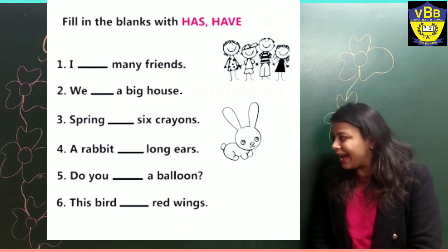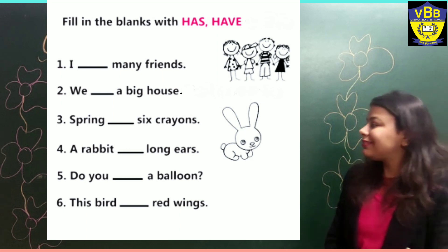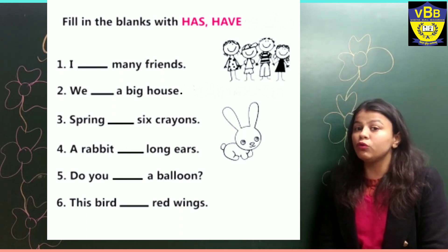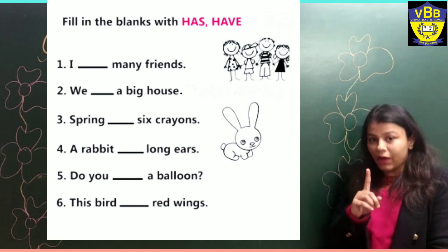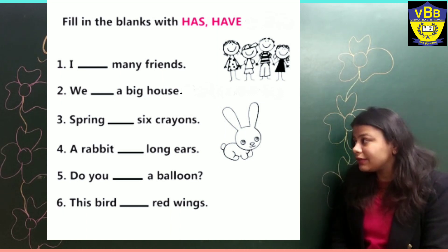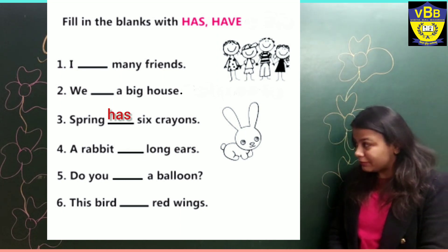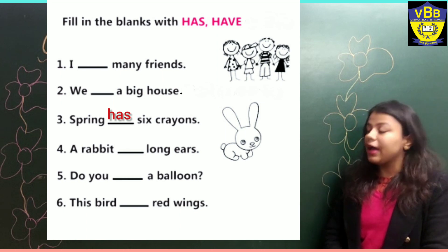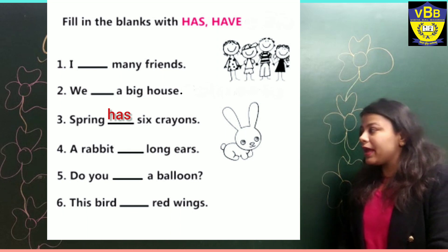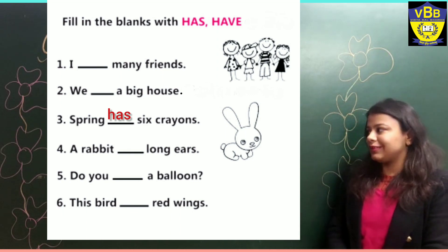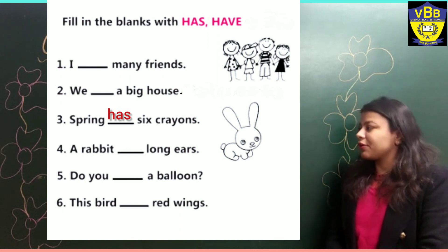The third sentence is: Spring dash six crayons. Spring is a name, so here we are talking about only one person, that is why we will use has. Our correct answer is: Spring has six crayons.